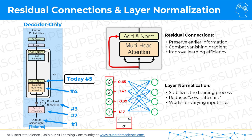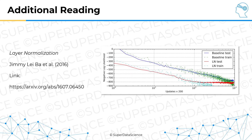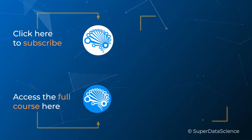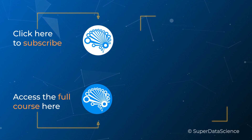If you would like to read more, here are two research papers. One is called 'Deep Residual Learning for Image Recognition,' where you can learn about residual connections — it's very highly cited with over 180,000 citations. The second paper is 'Layer Normalization,' where you can read all about layer normalization. Make sure to check out the videos on the right or the full course in the description to continue your learning, and I look forward to seeing you there.